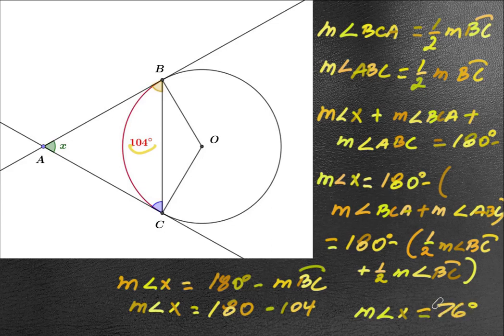Okay, so that's it for now. And again, for this type of problem, you don't need to show all that. All you have to know is that measure of X here is equal to 180 degrees minus measure of intercepted arc BC, and you can use it to solve this type of problem. Thank you.